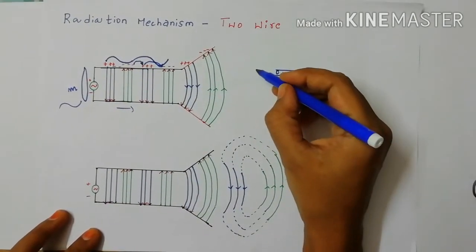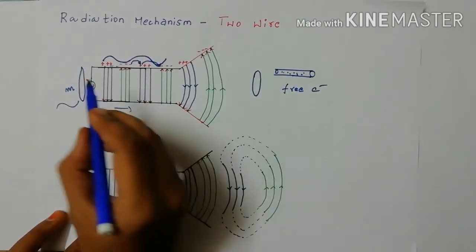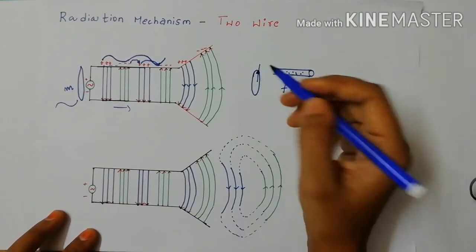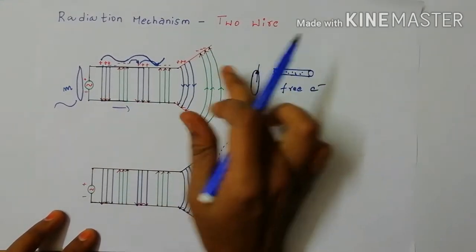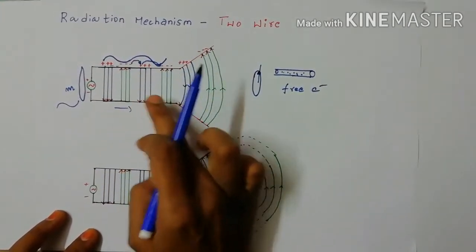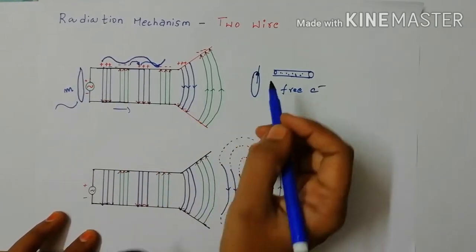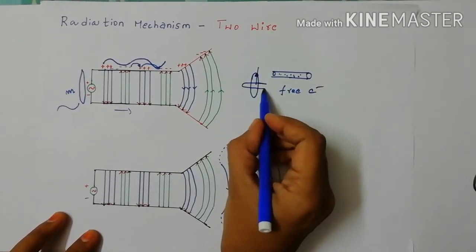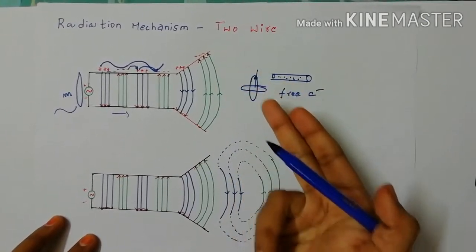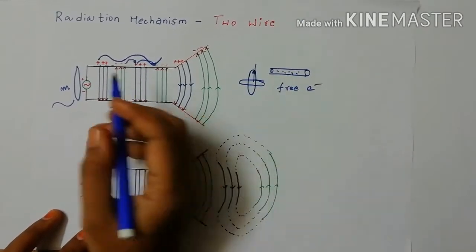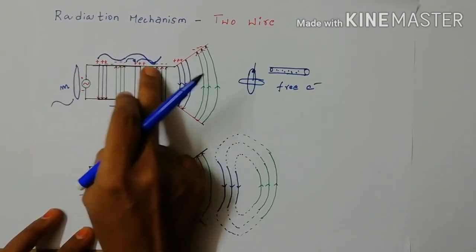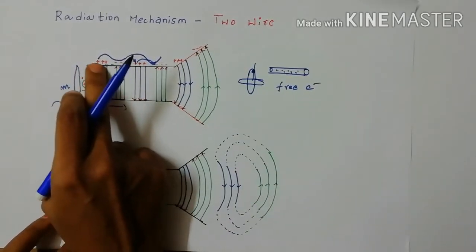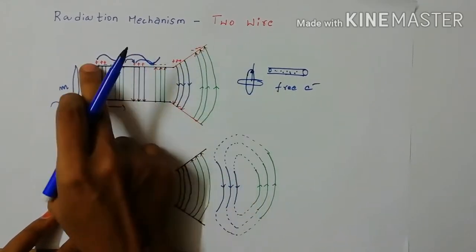The electric field is created in this direction and the field lines have a tangential position according to this electric field. Since this electric field is continuously changing — because we are using an AC source — we know that a change in electric field produces a change in magnetic field. These two are always mutually perpendicular. This electric current passes along this direction.